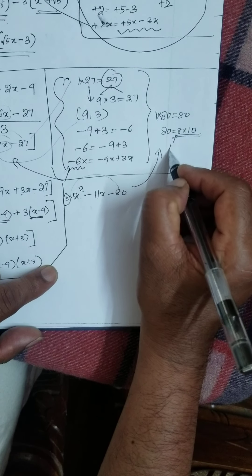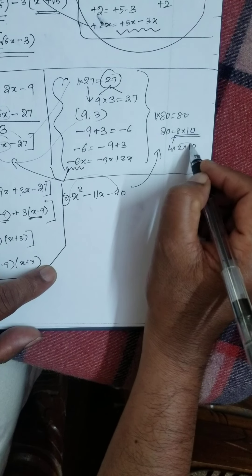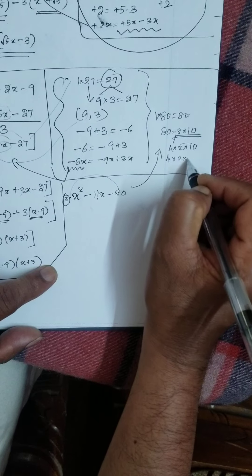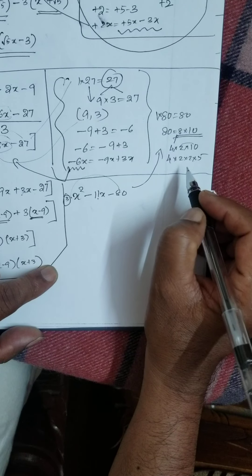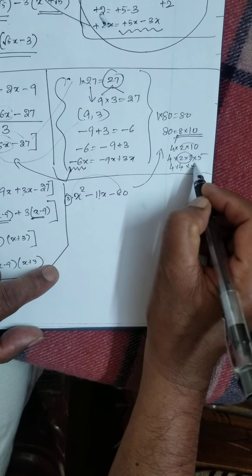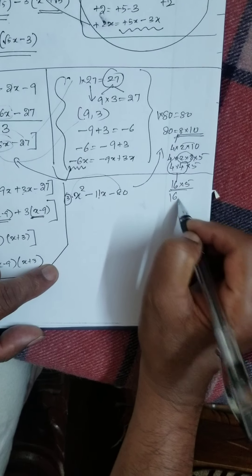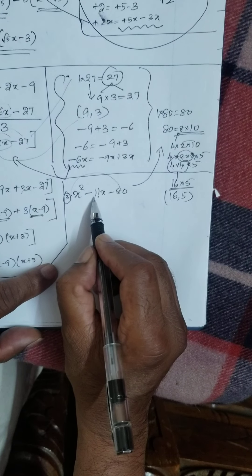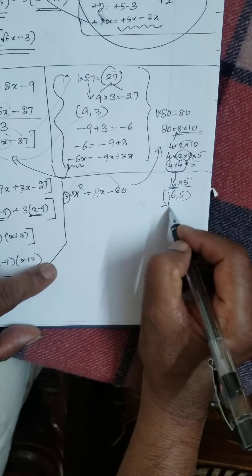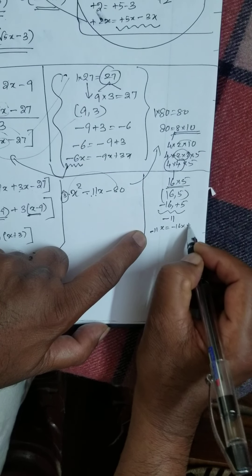4 into 2, 2 into 2, into 5. Here — 4 into 4 into 5, or 16 into 5. From 16 and 5, is it possible to get 11? Yes. Here, what is the sign? Minus. Therefore: minus 16 plus 5 gives minus 11. You are getting it. Therefore minus 11x can be written as minus 16x plus 5x.